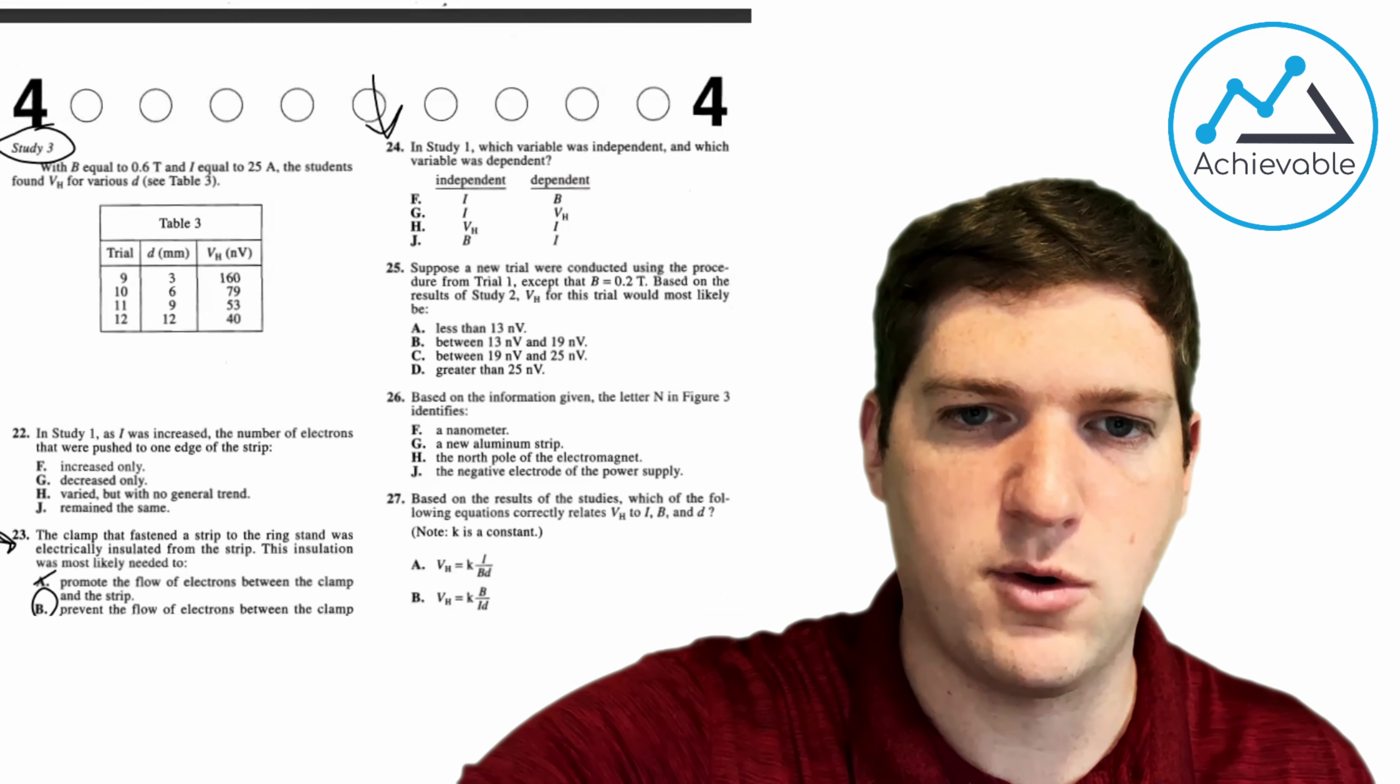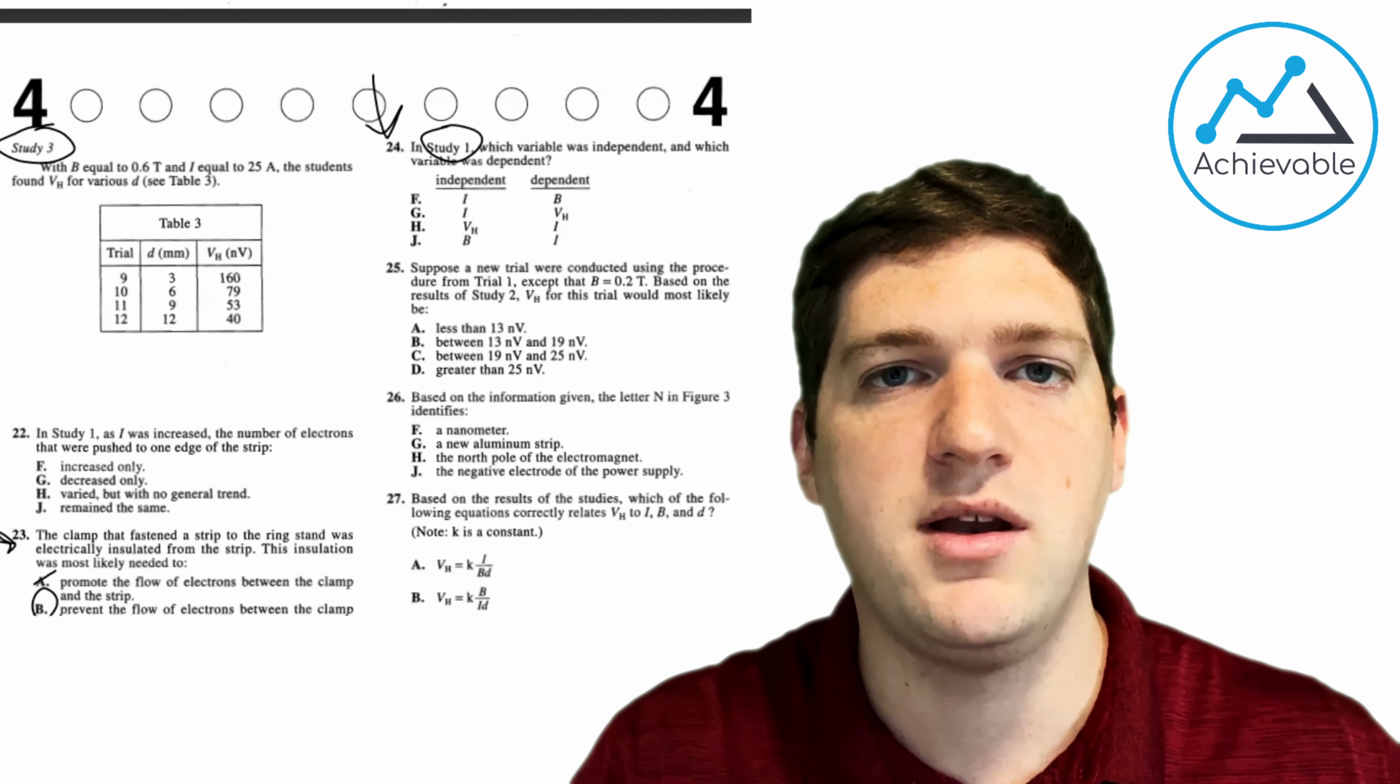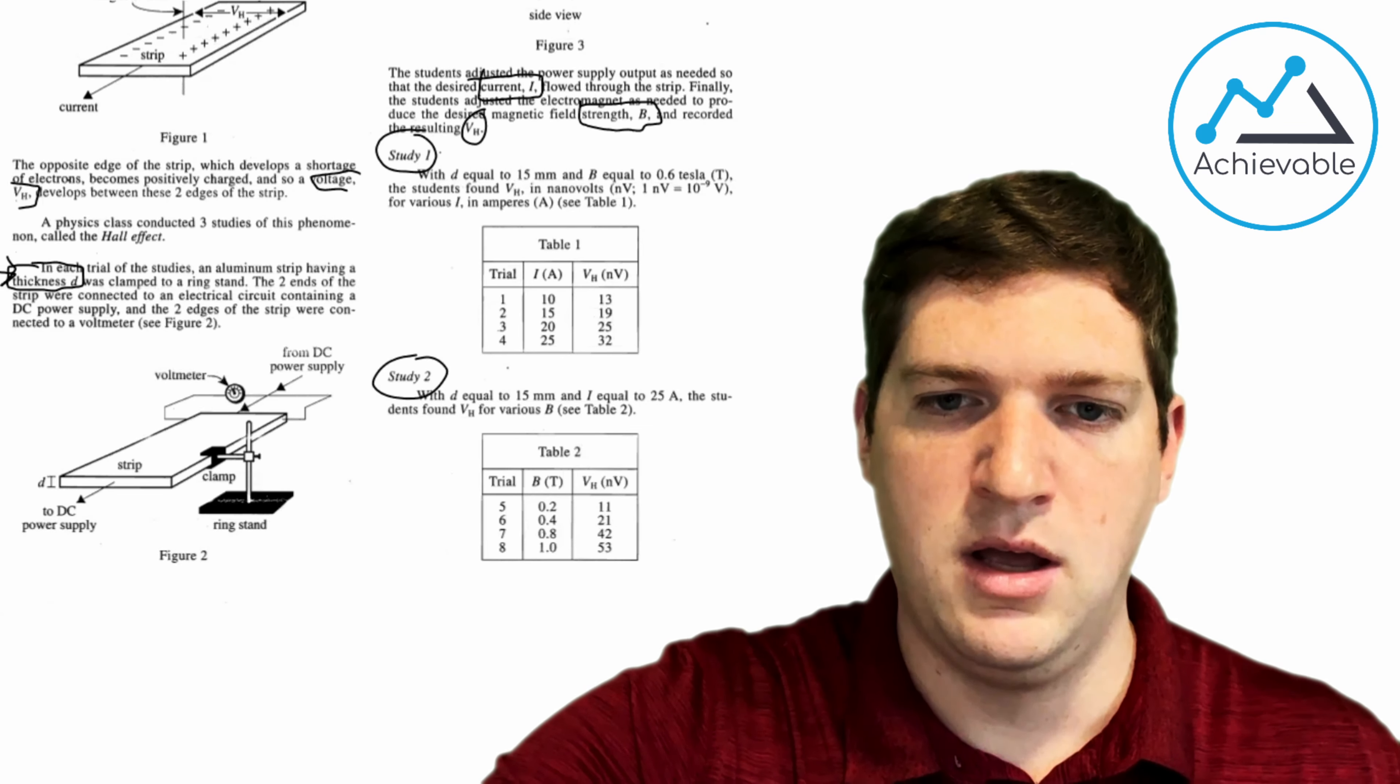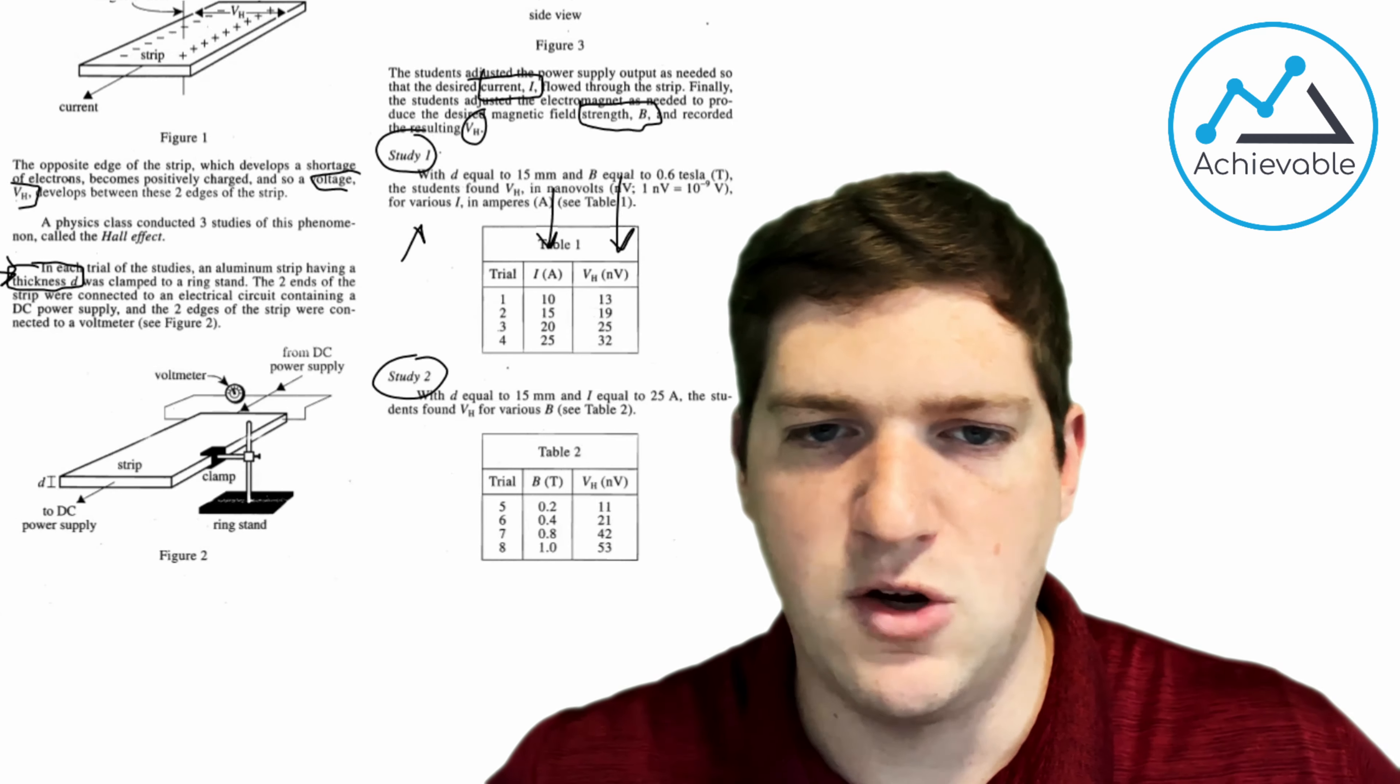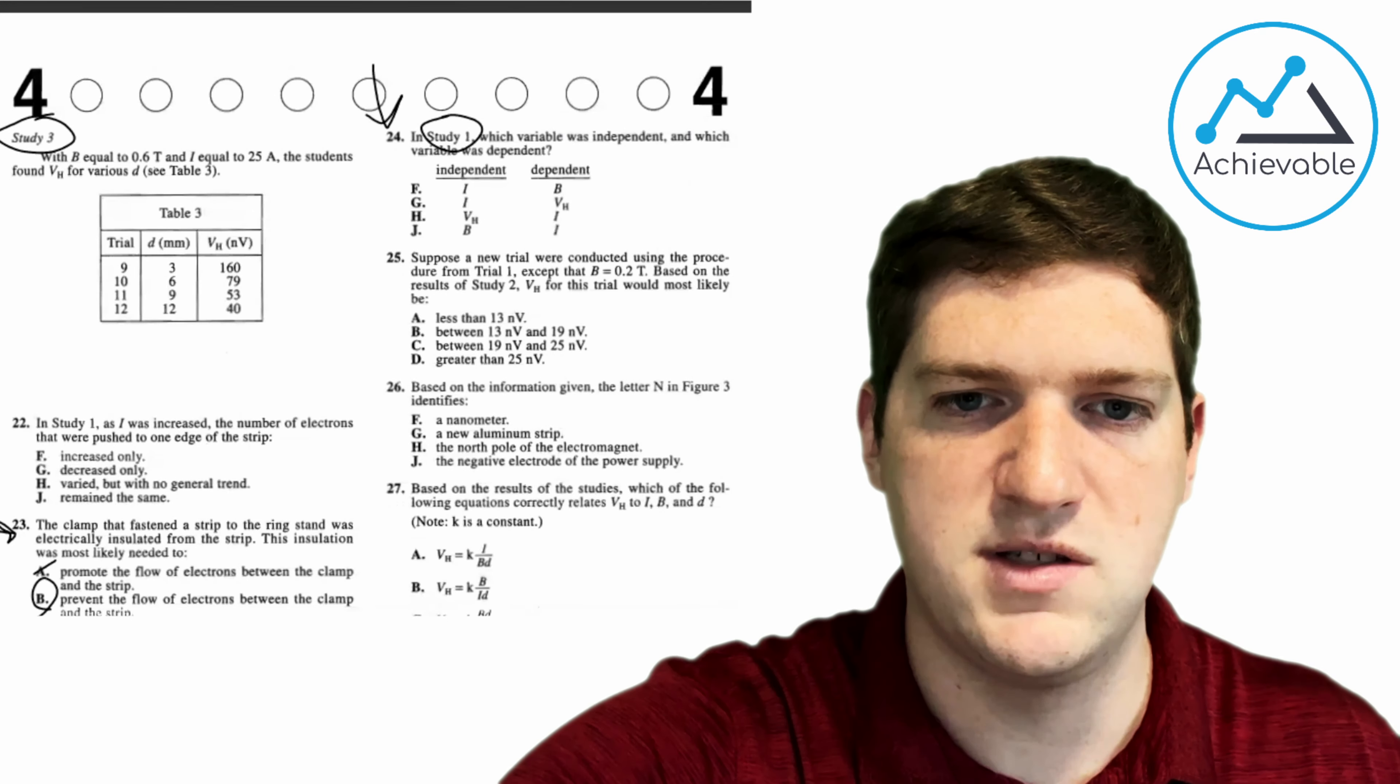The other question I wanted to look at was question number 24. In study one, there's another location clue, so we're going to circle that. Which variable was independent, and which variable was dependent? Again, here they require you to know that the difference between independent and dependent variables. Independent is something you select or change, and then dependent is what you measure. So study one, again, without reading a whole ton, it looks like they picked an I and read V. Just to make sure, I'm going to go ahead and reread this little section here. With D equal to 15, B equal to 0.6, the students found VH for various I. So yeah, they're setting I, and they're reading VH. So I is going to be our independent variable, since we're picking it, and VH is our reading, which makes it our dependent variable. So the answer here is G. Again, not reading a whole ton, only reading when I absolutely have to.